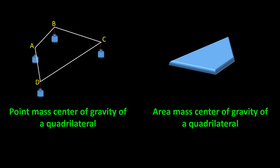In this video I want to show you how to find the center of gravity of a quadrilateral. The same way as I explained in the previous video for a triangle, here also we have two types of center of gravity. One is point mass center of gravity, in which the masses are located at the vertices, and one is area mass center of gravity, in which the mass is distributed across an area. Now here I assume that these masses are equal, and in this case the mass is distributed uniformly. Unlike the case of a triangle, where both center of gravities are actually one point, for a general quadrilateral this is not true, so they might be two different points.